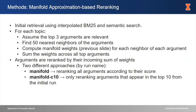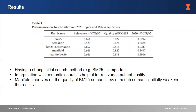To use this manifold approximation, we first created an initial ranking using the interpolation between BM25 and semantic search. We assume the top three arguments are relevant and find the 50 nearest neighbors for each. We compute the manifold weights as described and sum them across all the top arguments. Then we re-rank all arguments according to their score for one approach, and for the other we only re-rank the top 10 from the initial run.